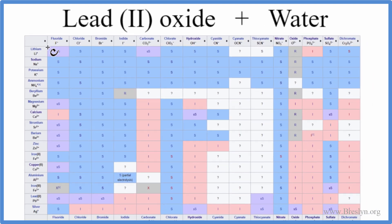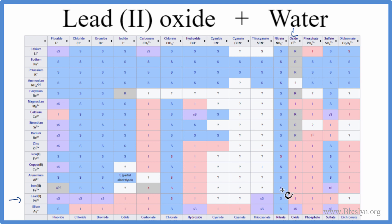So we go down the table — these are the positive ions. We're looking for lead 2, so that'll be a 2+ charge. We find lead right here, Pb2+, and then we go across the table to see where it meets with the oxide. Right here is where it meets, and we see that it's marked I, and that I means it's insoluble in water. So lead 2 oxide is insoluble in water.